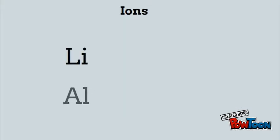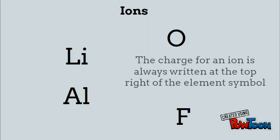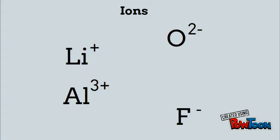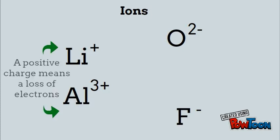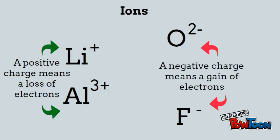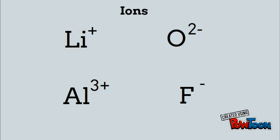If we were to take elements like lithium, aluminum, oxygen, and fluorine, we always write the charge for an ion on the top right corner of the element symbol. So we have Li+, Al3+, O2-, and F-. A positive charge always means that we've lost electrons, and a negative charge always means that we have gained electrons.